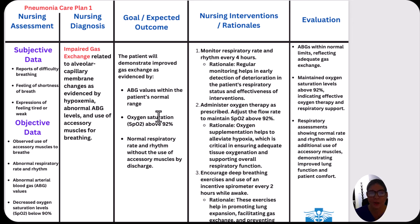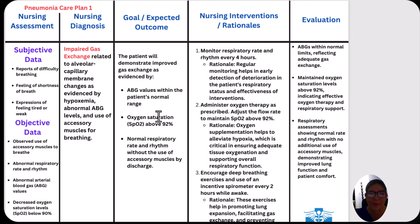So we're going to do the first care plan. As we remember, pneumonia is an infection of one or both of the lungs. It could be caused by bacteria, viruses, or fungi. For nursing care plan number one, we're going to do impaired gas exchange.